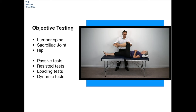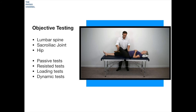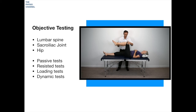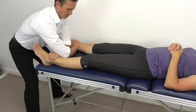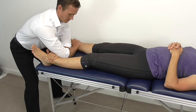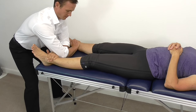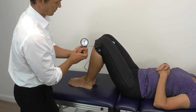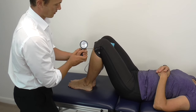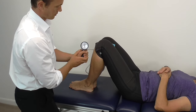Moving on to hip assessment with internal and external rotation, the FABER test, and then bringing the hip into its inner quadrant for the FADIER test. I then move on to specific adductor testing with the squeeze test shown here with a long lever. I then use biofeedback to get a numerical value for this short lever squeeze test, with the hips placed at about 45 degrees, a position which particularly loads the adductor longus muscle.